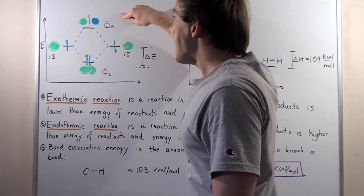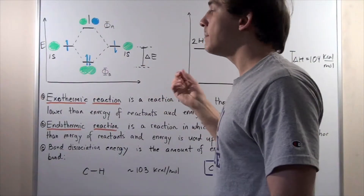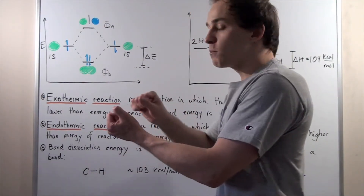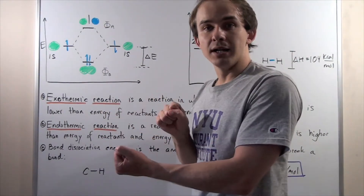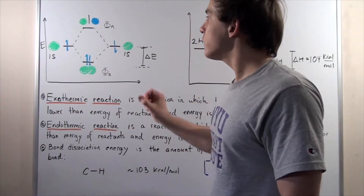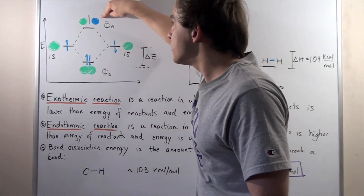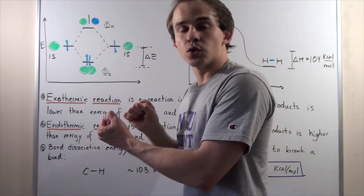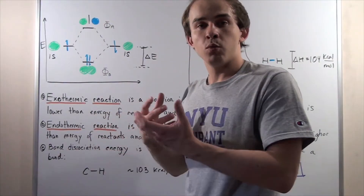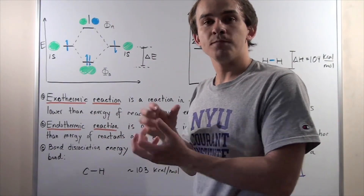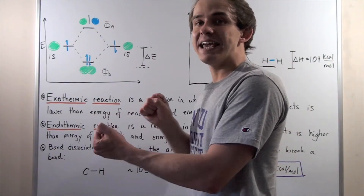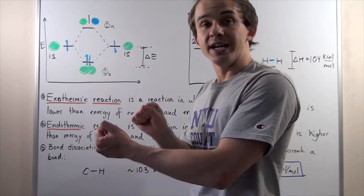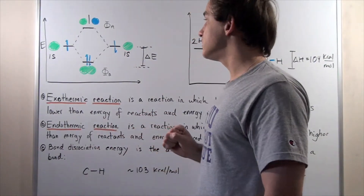φa, the anti-bonding molecular orbital, is responsible for breaking the bond. If electrons are found within this orbital, those electrons will play a role in destabilizing our molecule and breaking that covalent bond.